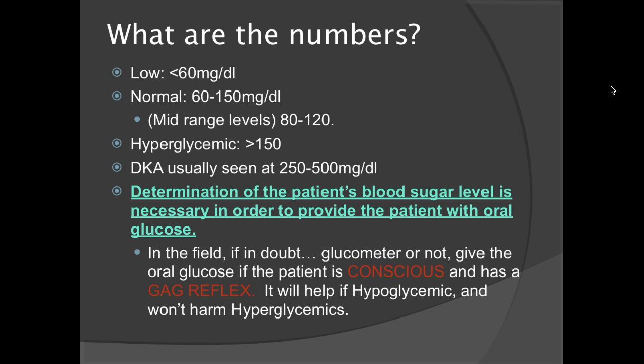Determination of the patient's blood sugar level is necessary in order to provide the patient with oral glucose. In the field, if in doubt — glucometer or not — give oral glucose if the patient is conscious and has a gag reflex. This will help the hypoglycemic patient, and it won't generally harm the hyperglycemic, since oral glucose is fast-acting and also very quickly cleared from the system.